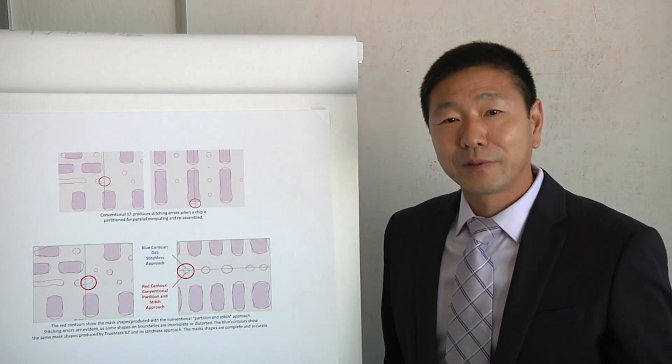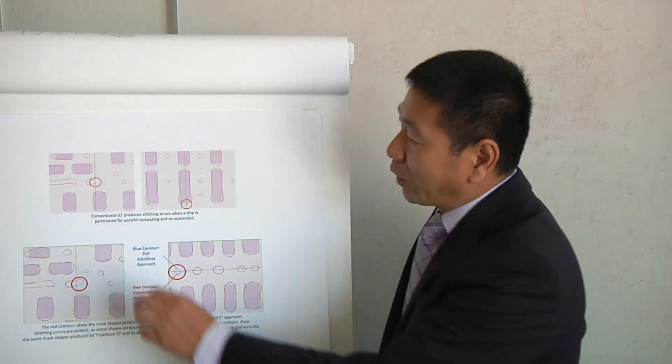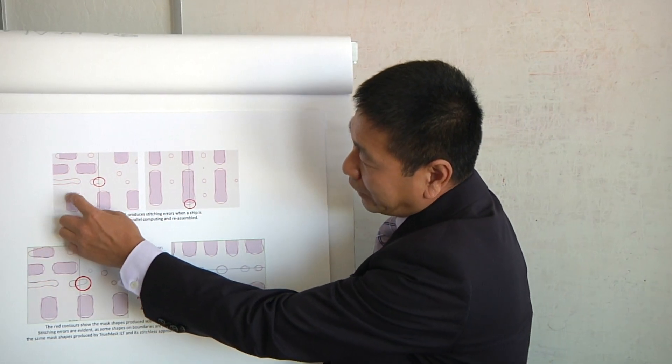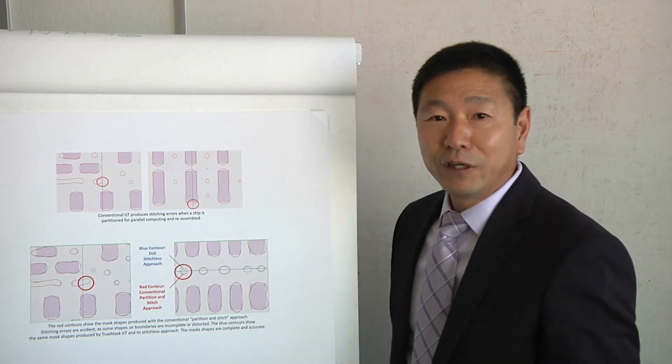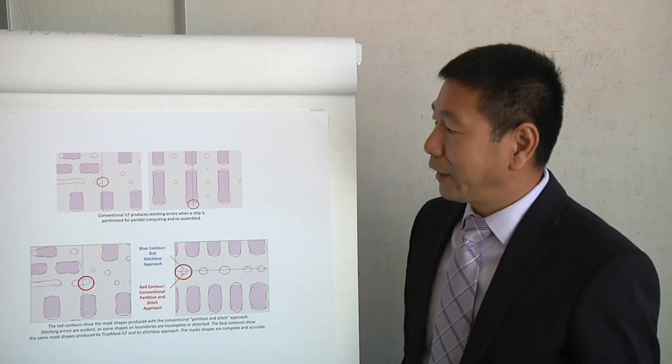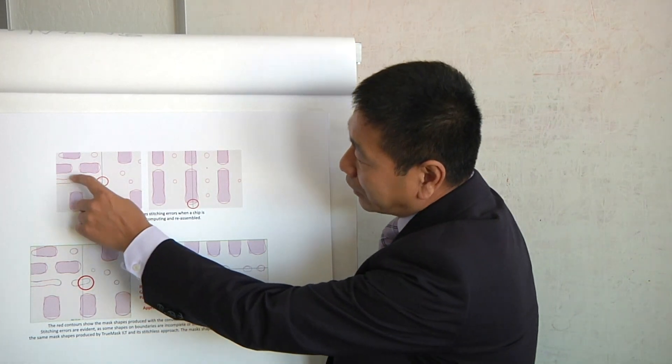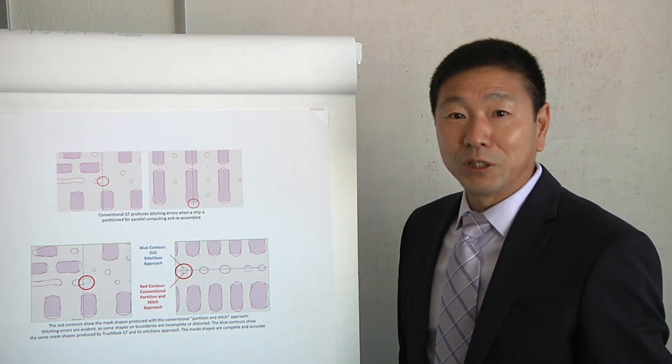And how big are those features? Bring that up to scale for us. What's the size of this? Yeah. So what we are looking at, like the main feature, these random contact, they are about like a wafer dimension is about like 50 to 100 nanometer in that range. Those assist features, they are around like 40 nanometers on wafer.